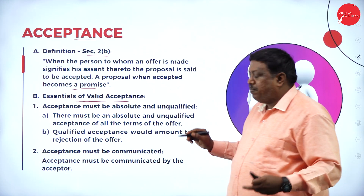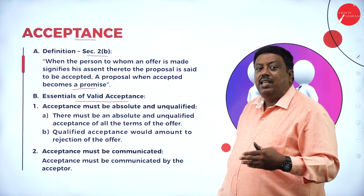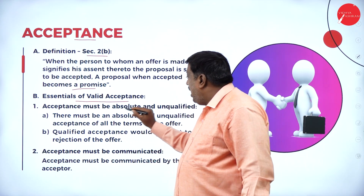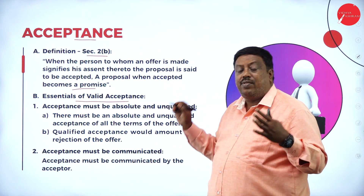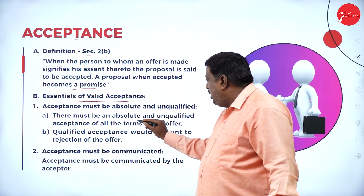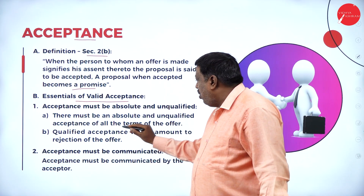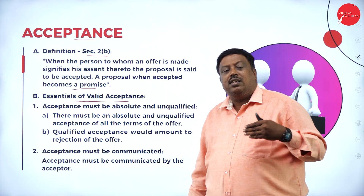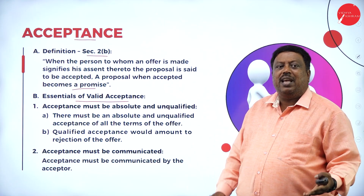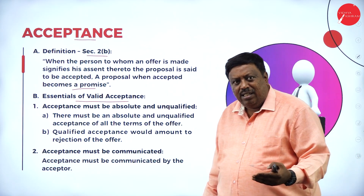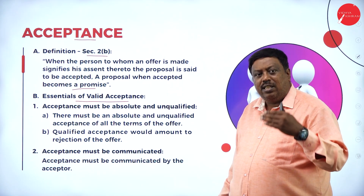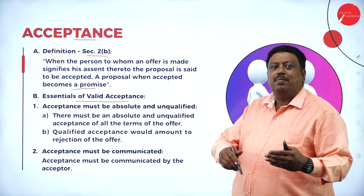Essentials of a valid acceptance. The first one: acceptance must be absolute and unqualified. It should be perfect. There must be an absolute and unqualified acceptance of all the terms of the offer. Whatever terms are laid down in the agreement, those should be accepted by the acceptor. Then it is called that the person has accepted all the terms and conditions, and it becomes a promise.